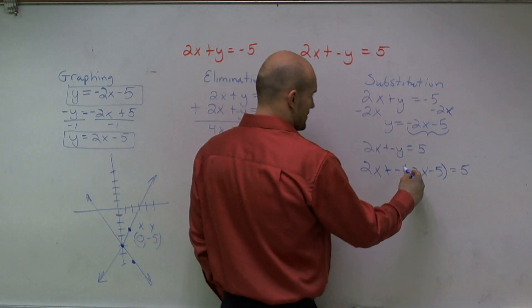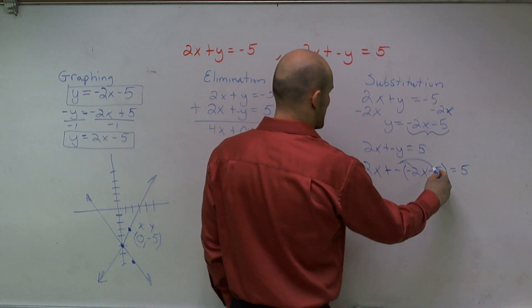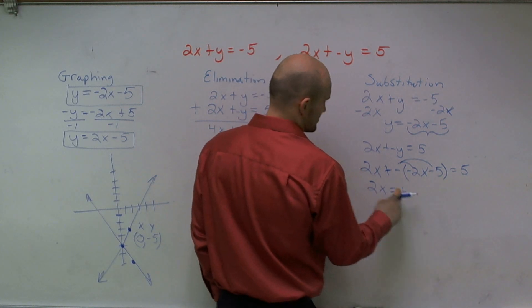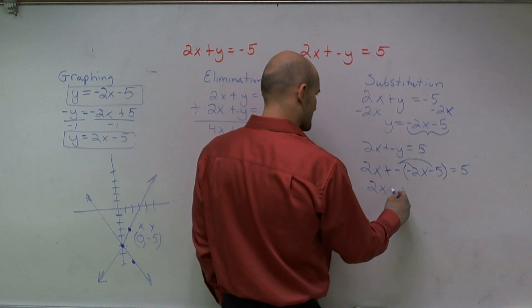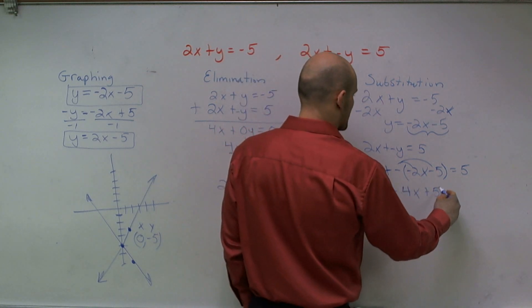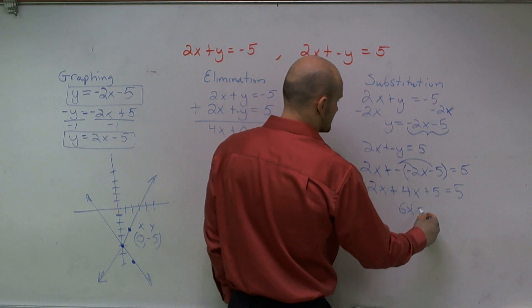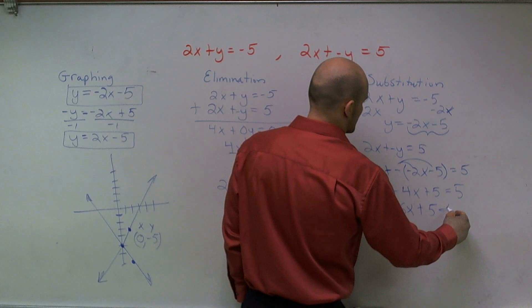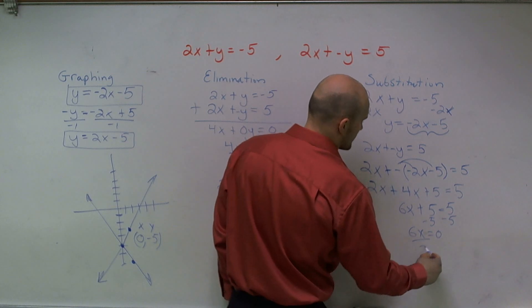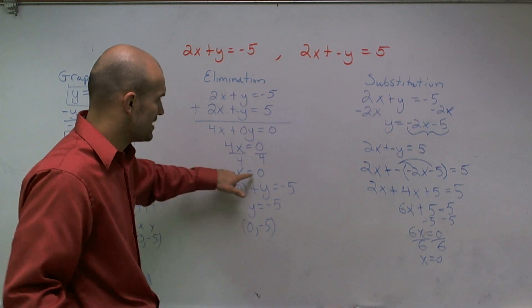So now I can use my distributive property. So I get 2x plus negative times negative is 4x plus 5x or 5 equals 5. This adds up to 6x plus 5 equals 5. I subtract the 5, so I get 6x equals 0, divide by 6, x equals 0. Again, the exact same what we worked at over here, right? We knew x equals 0.